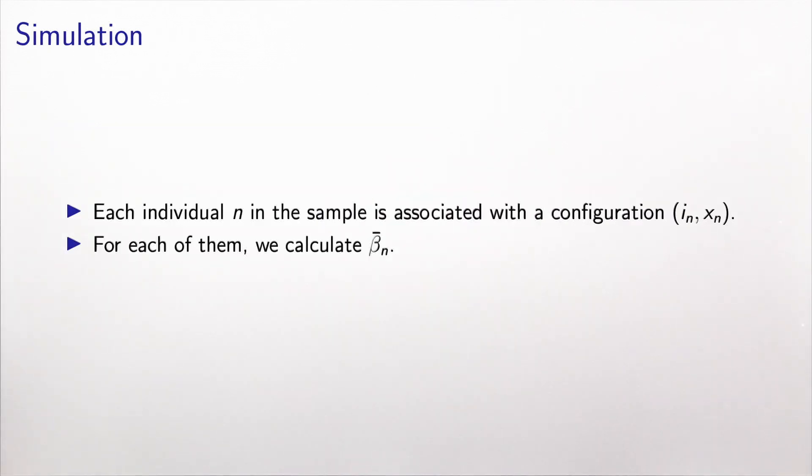So it means that we can calculate this quantity for each individual in the sample. Indeed, each individual in the sample is associated with this configuration, i_n, x_n. And therefore, we can use the formula derived in the previous slide to calculate the mean value of the parameter. And this is why it's called an individual value parameter, because this person n is characterized by what we observe from her, i and x. And we derive beta bar based on these values.